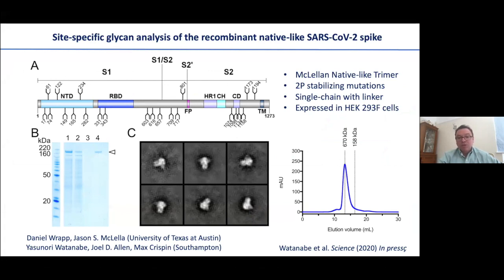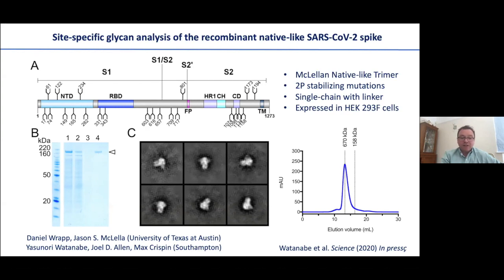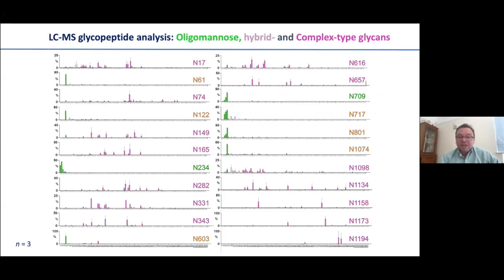When we started looking at SARS-CoV-2, we knew about the importance of the relationship between native protein architecture and getting valuable information out of carbohydrate processing. We worked with Jason McLellan's group — Daniel Rapp and Jason McLellan at the University of Texas at Austin — who provided constructs containing a stabilized form of the envelope spike truncated at the membrane. This is a soluble form that behaves very nicely as a trimer, and the electron micrographs confirm it is very well folded, giving us high-quality material for site-specific analysis.